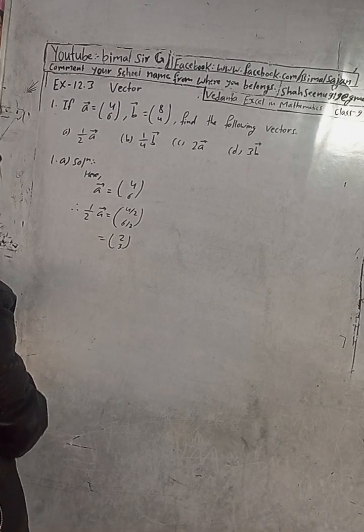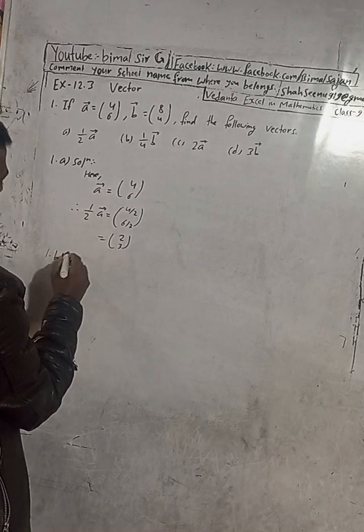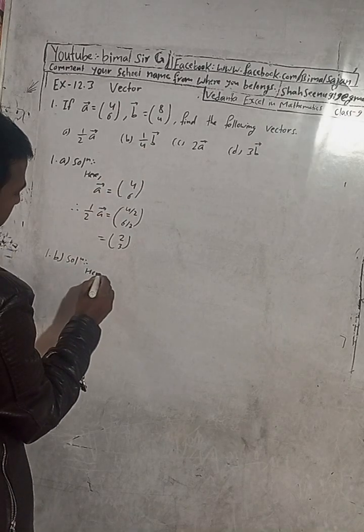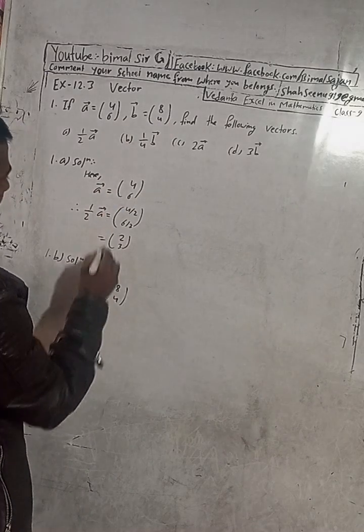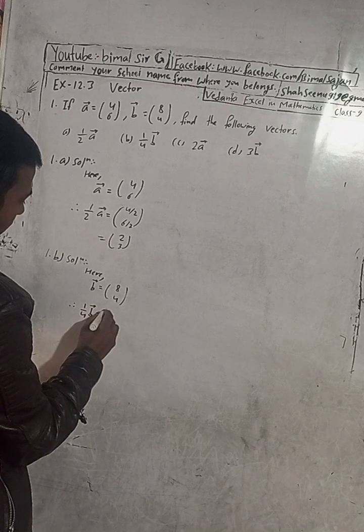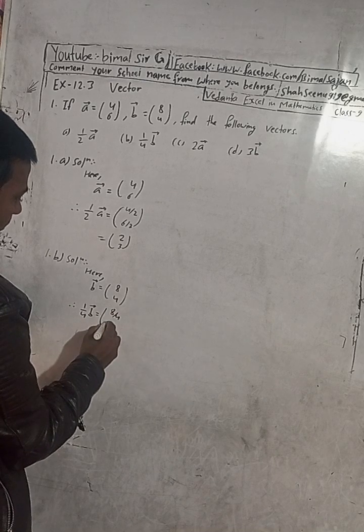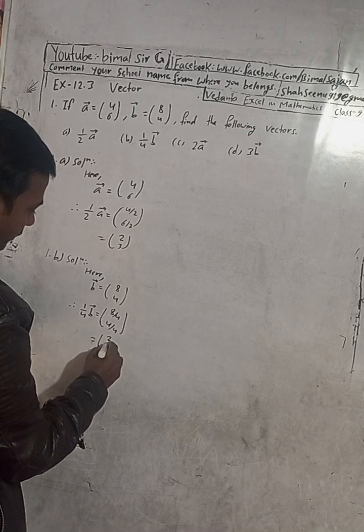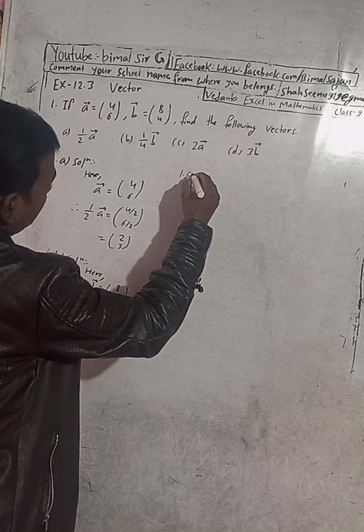Now solution of 1b. We have to find 1/4 b vector. Here b vector is equal to (8, 4) and we have to find 1/4 b vector. Therefore 1/4 b vector is equal to, 1/4 means divide by 4, so 8 by 4 and 4 by 4. This is equal to 8 by 4 is equal to 2, and 4 by 4 is equal to 1, so (2, 1).